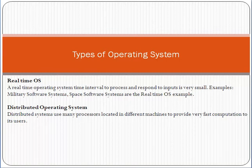Another type is the real-time operating system. In a real-time operating system, the time interval to process and respond to input is very small. Military software systems and space software systems are very good examples of real-time operating systems.